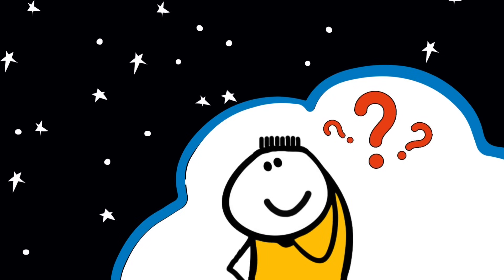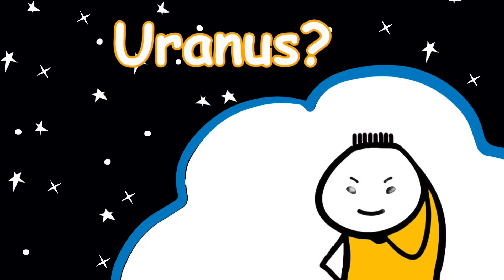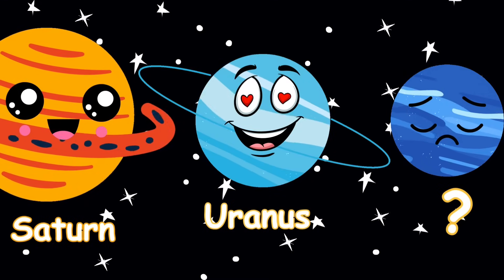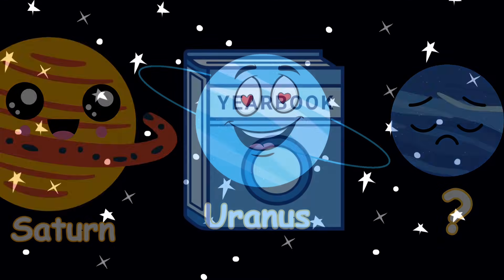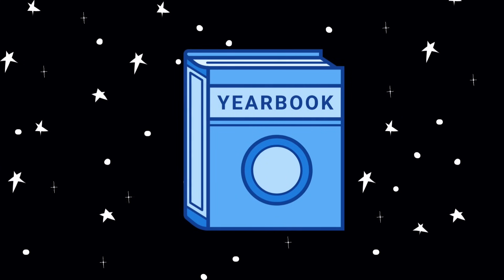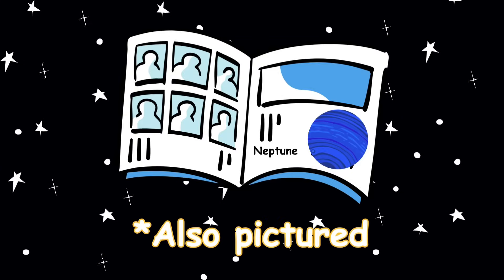People forget its name, mix it up with Uranus, stop giggling, and sometimes even skip it entirely when naming the planets. If Neptune had a yearbook photo, it'd be in the back with a caption that says, also pictured, Neptune.